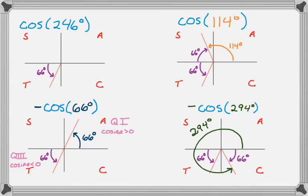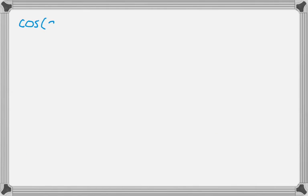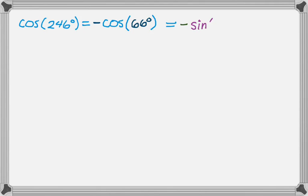Now we're going to write cosine of 246° in terms of sine. We've done all four quadrant cosine versions. Starting from cosine of 246 = negative cosine of 66, I apply the cofunction identity: cosine of x equals sine of 90 degrees minus x. So that becomes negative sine of 90 minus 66, which is negative sine of 24 degrees.